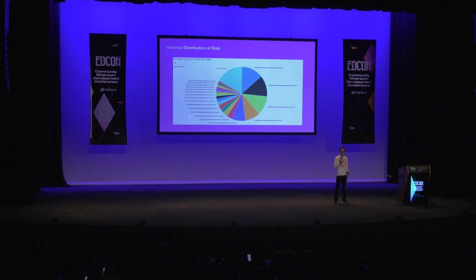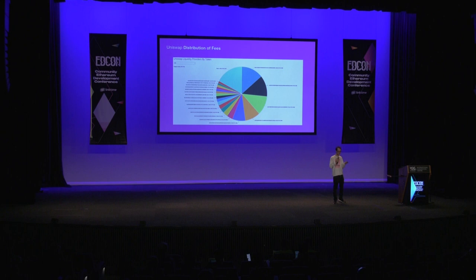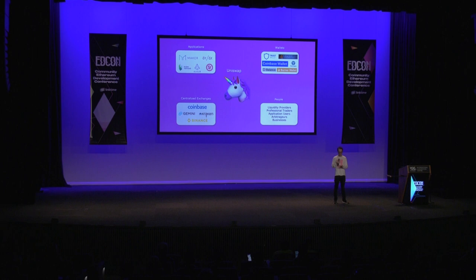This is the distribution of liquidity. This is the distribution of risk. This is the distribution of rewards. Rewarding people based off the risk they take and the amount they contribute is pretty reasonable. A lot of projects have built in disproportionate reward systems, where people who don't take on very much risk reap a huge percentage of the rewards.